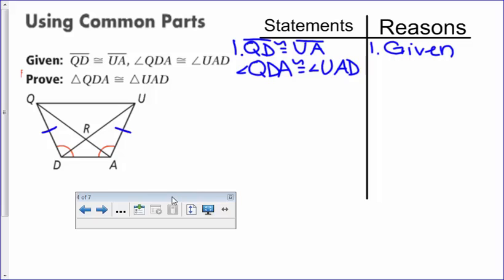I would mark it. But you see here that we've already marked QD congruent to UA. And then angle QDA is congruent to UAD. So QDA is this angle right here. And UAD is this angle right here. Okay. If you can do this looking at it like this,